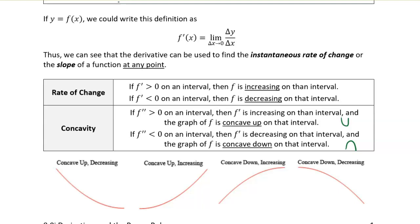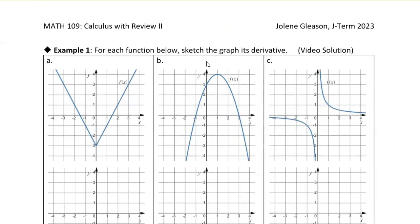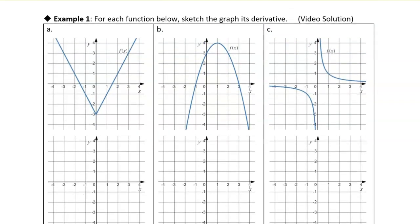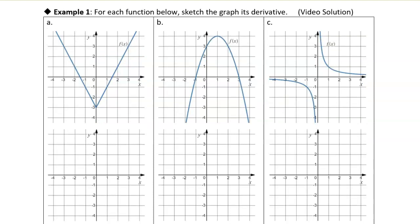So we have these four different variations of combinations of the rate of change and the concavity. We can have a curve that's concave up and decreasing, concave up and increasing, concave down and increasing, or concave down and decreasing. Let's get to example one. We're given the graph of a function, and we're asked to graph its derivative. Just remember that the derivative is just slope, so we can look at the slope.